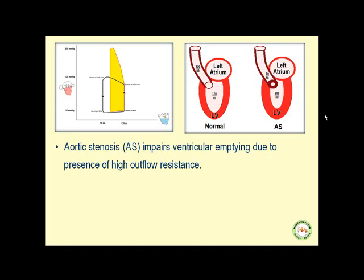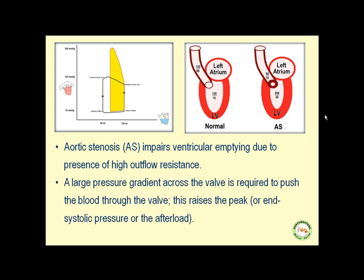Aortic stenosis impairs ventricular emptying due to the presence of high outflow resistance. A large pressure gradient across the valve is required to push blood through the valve. This raises the peak or end-systolic pressure — the afterload. The pressure increases at end systole to a very high level, like 200 mmHg. In the normal heart, the pressure in systole is practically similar to the pressure of the aorta — 120 here, 120 there — so across the aortic valve the pressure differential is similar.